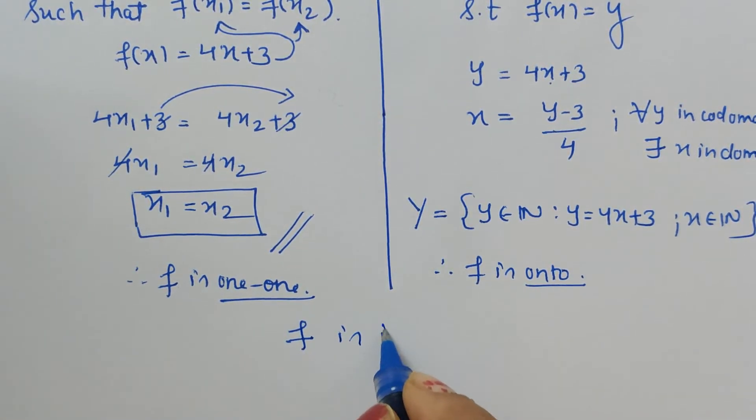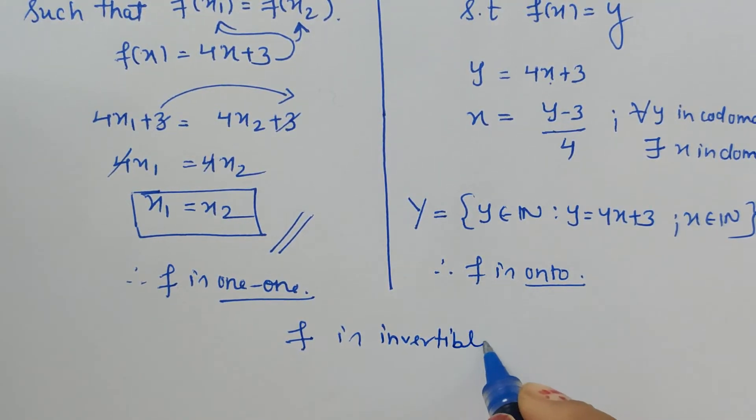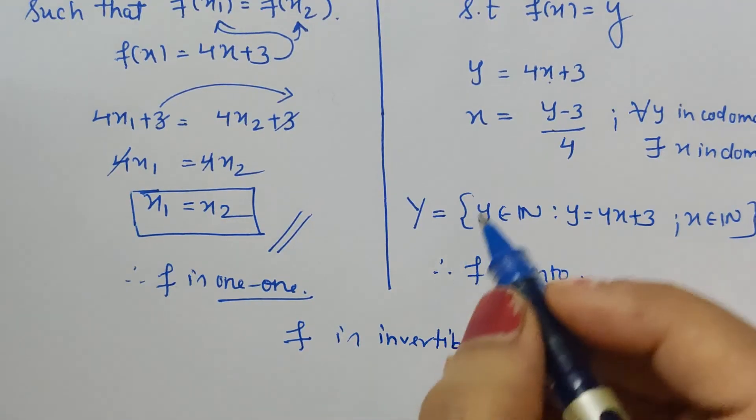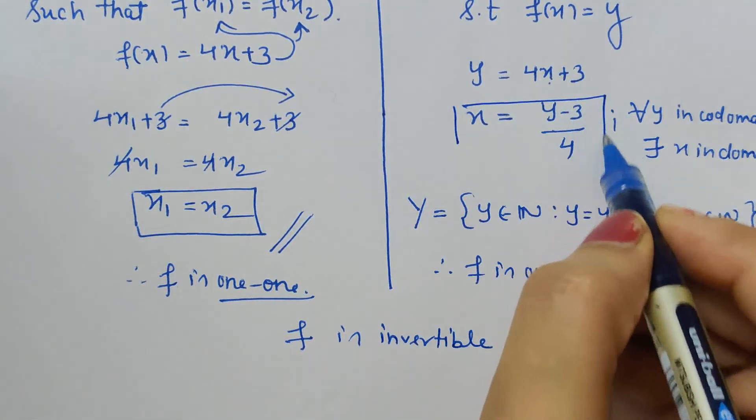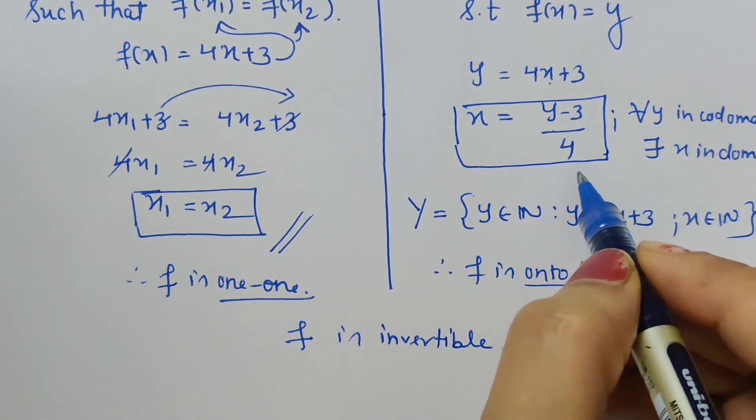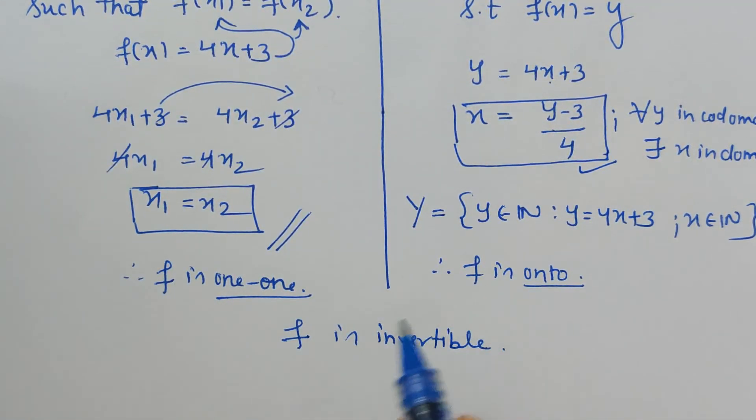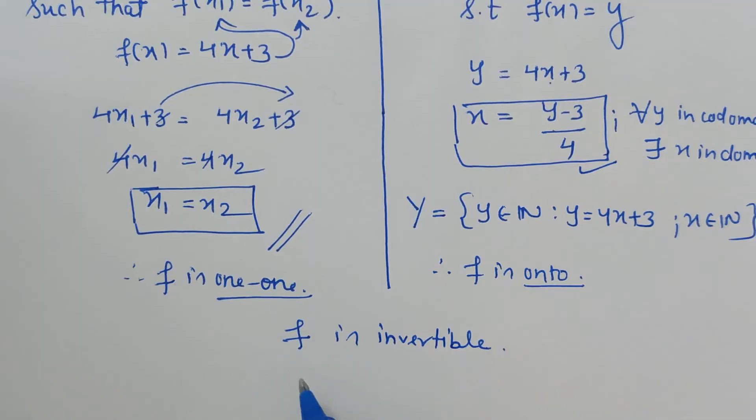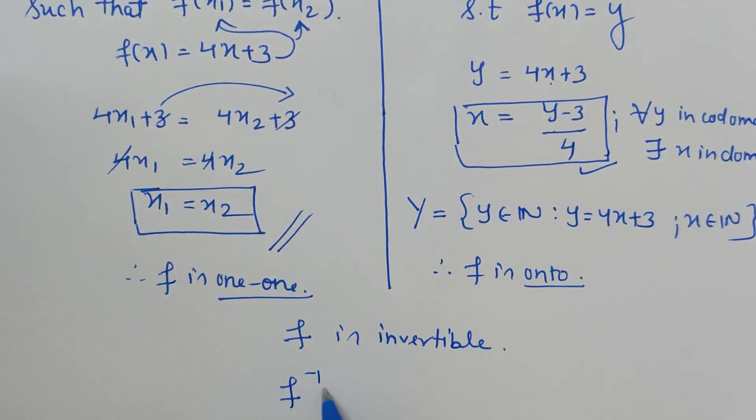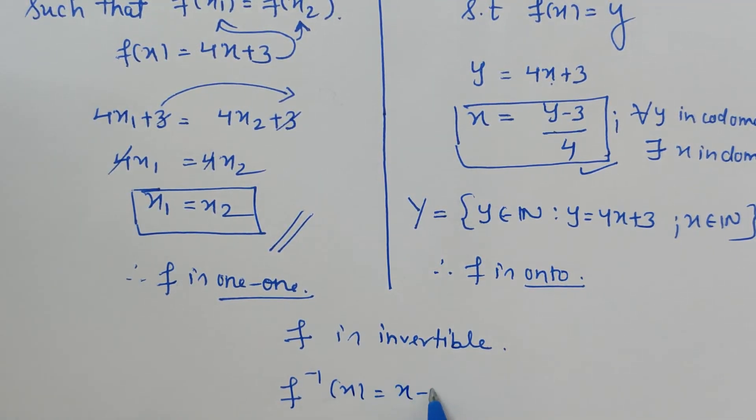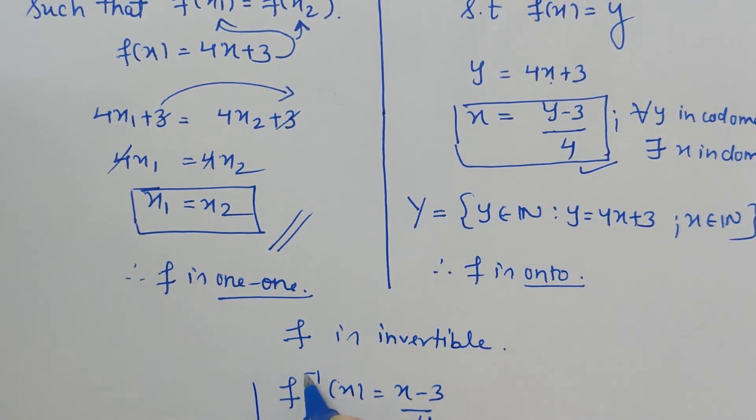The given function is having its inverse, and what will be the inverse? Whatsoever we have written x in the form of y, that is the inverse actually. But in the beginning itself we cannot write, first we have to prove it, and then we have to declare that it is f inverse of x is (x minus 3) upon 4. This is one way of writing the inverse of the function.